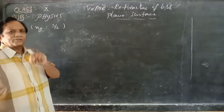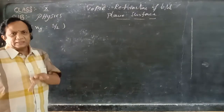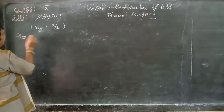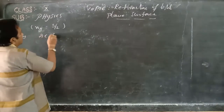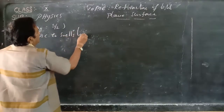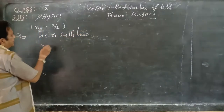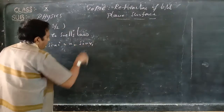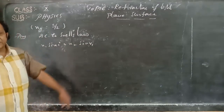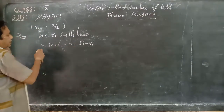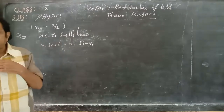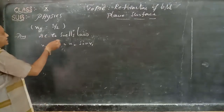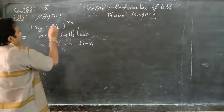First of all, we have to calculate the angle of the refracted ray. We can apply Snell's law. According to Snell's law, N1 sine i is equal to N2 sine R. The ray is entering from air to glass, so the refractive index of glass is taken as 3 by 2.